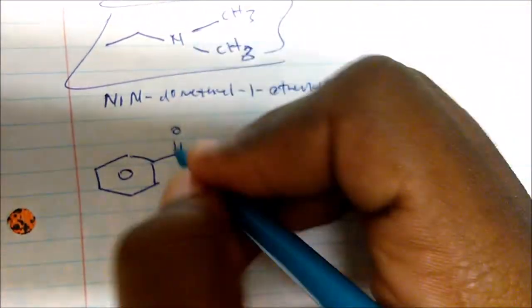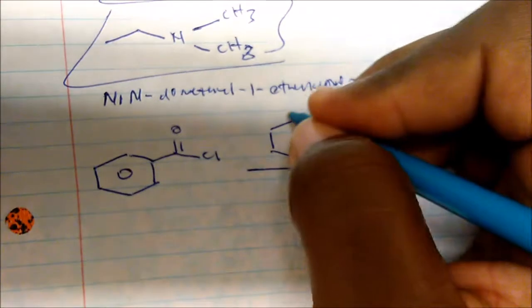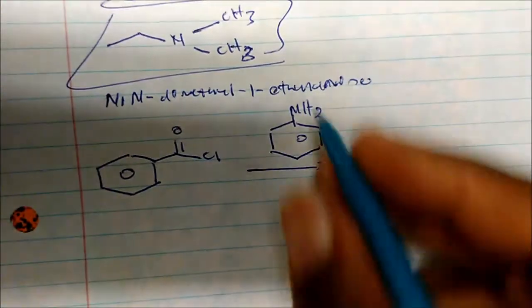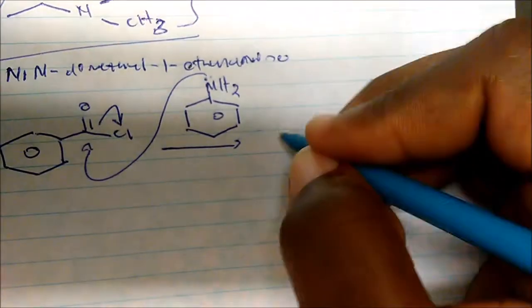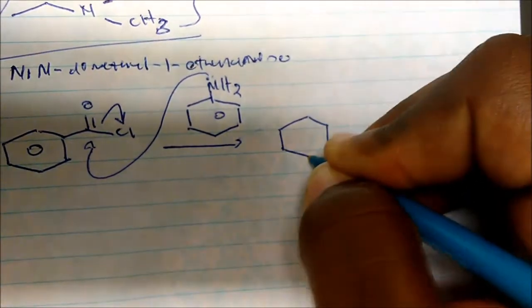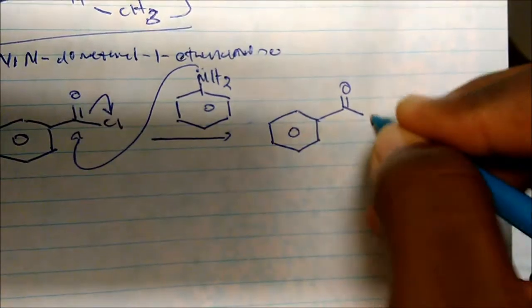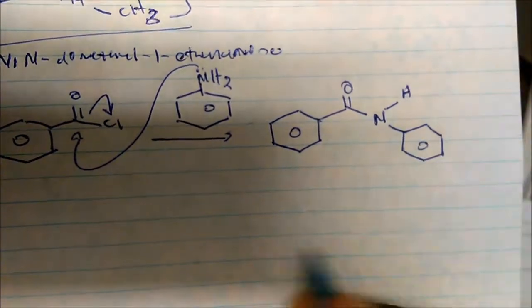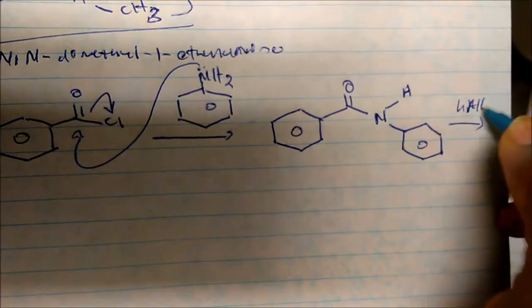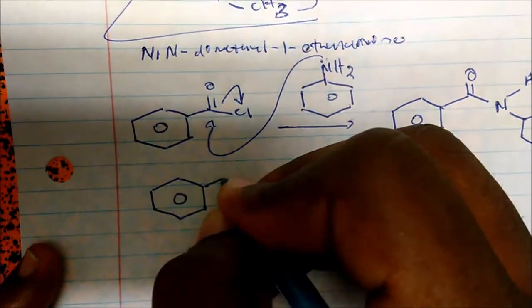If we take this acid chloride compound and add aniline, my nitrogen is the nucleophile so it will attack and displace the chlorine atom. We come to a structure where we have the carbonyl carbon bonded to a nitrogen that now has one hydrogen and a phenyl group. Then we reduce with lithium aluminum hydride and the carbonyl disappears.